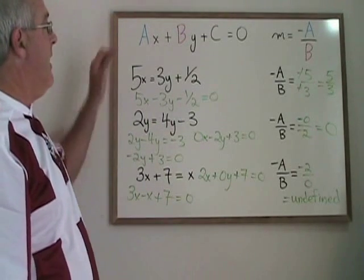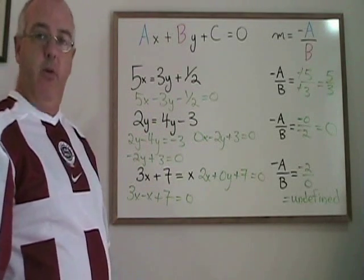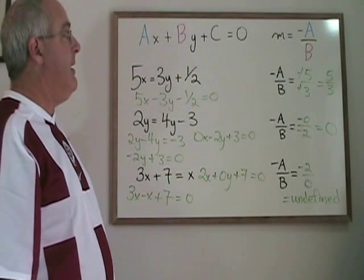This is how you can use the ax plus by plus c equals 0 form to find the slope of any straight line equation.